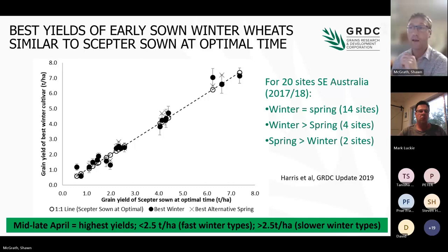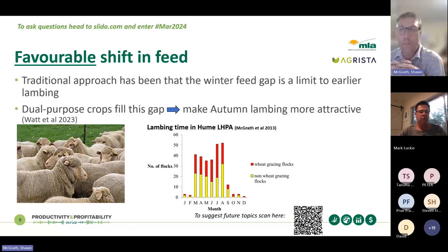One of the key benefits of having dual purpose and winter crops in systems with large cropping areas is that it gives farmers a spread of sowing time. It takes the pressure off the main May sowing period, allowing farmers to spread that timing, which means their main season crops in May can go in at the right time without being compromised by trying to get too large an area in over too short a period. A key consideration then is: is that shift in feed favourable? And what livestock do we have available to graze the crops during the winter and late autumn period?